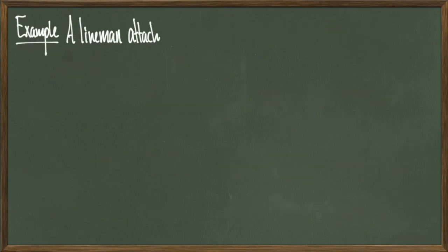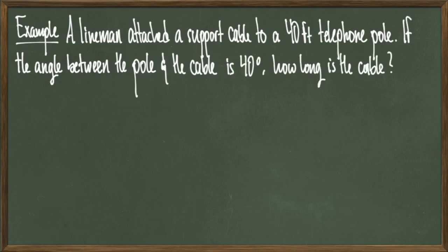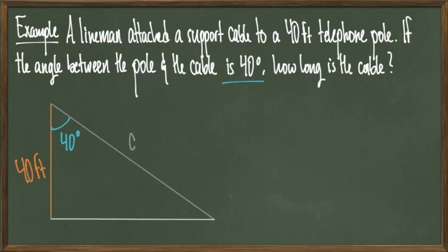For our last example, we'll do more of a word problem. Suppose that a lineman attached a support cable to a 40 foot telephone pole. If the angle between the pole and the cable is 40 degrees, how long is the cable? Just like last time, it's a good idea to draw the picture. To get an accurate picture, we have to make sure that the angle is in the right place.